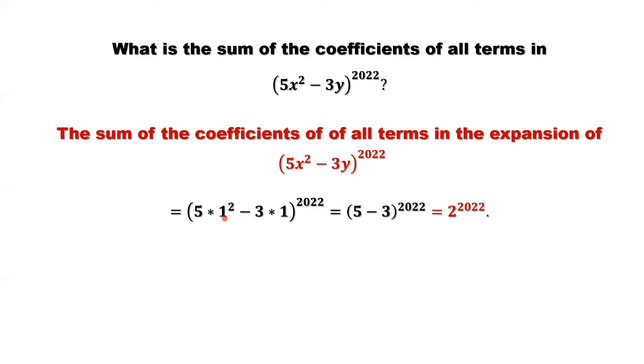The final answer should be this. Replace x by 1, he has 1 squared, y by 1, then to the power 2022. The inside part is 5 minus 3, which is 2. 2 to the power 2022 is the answer.